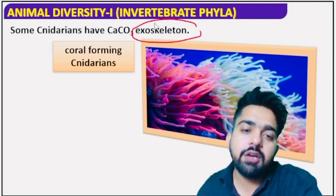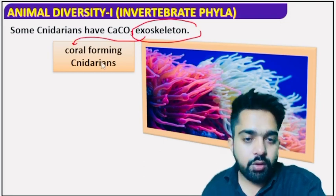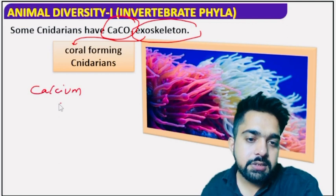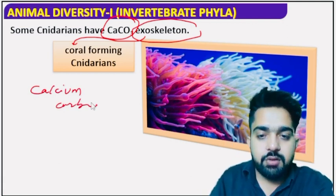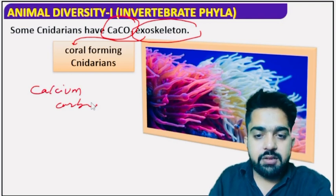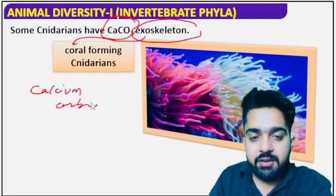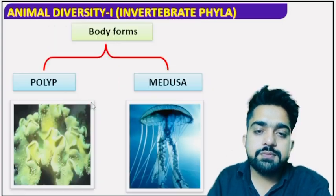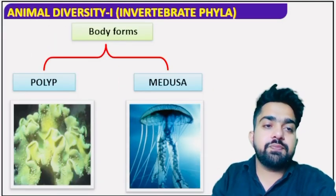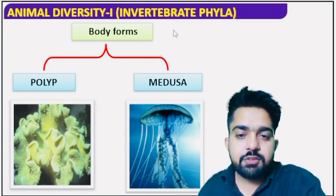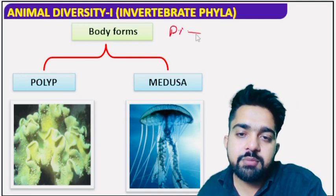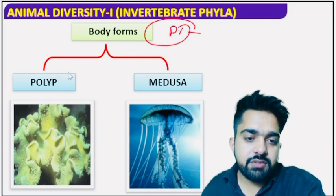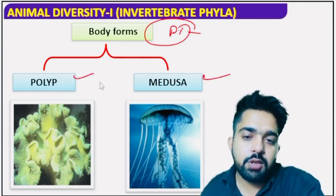Some cnidarians have a calcium carbonate (CaCO₃) exoskeleton. This exoskeleton is found in corals and is made of calcium carbonate. The exoskeleton is present outside the body, while the endoskeleton is present inside the body and is responsible for maintenance of body posture. Now, what is polymorphism — or more specifically, dimorphism? Dimorphism means two external forms. In phylum Cnidaria, organisms show two different forms: polyp and medusa.